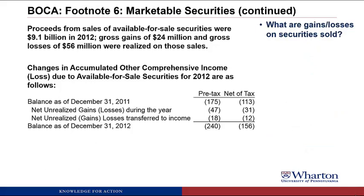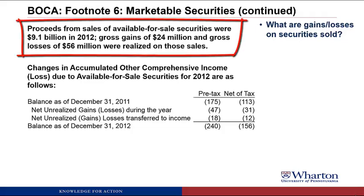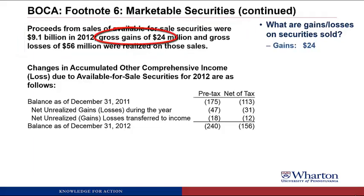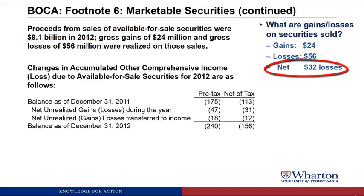Now let's go to the question of what are the gains and losses on securities that were sold. Here's the rest of footnote six for marketable securities. At the top, it talks about proceeds from sales of available for sale securities of 9.1 billion in 2012. Gross gains of 24 million and gross losses of 56 million were realized on those sales. So we have gains of 24, losses of 56, a net loss of 32. You can have both gains and losses because you're selling individual securities, and each individual security has its own embedded gain or loss.